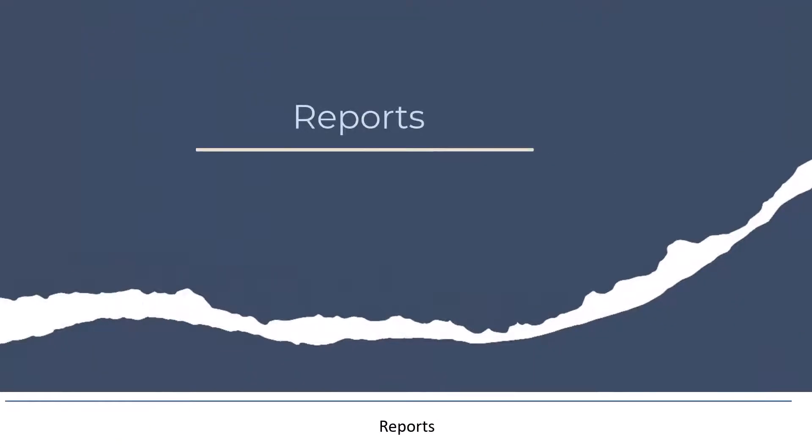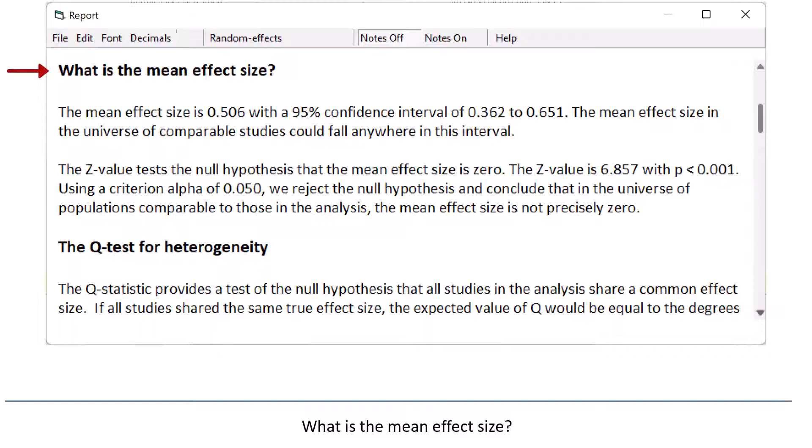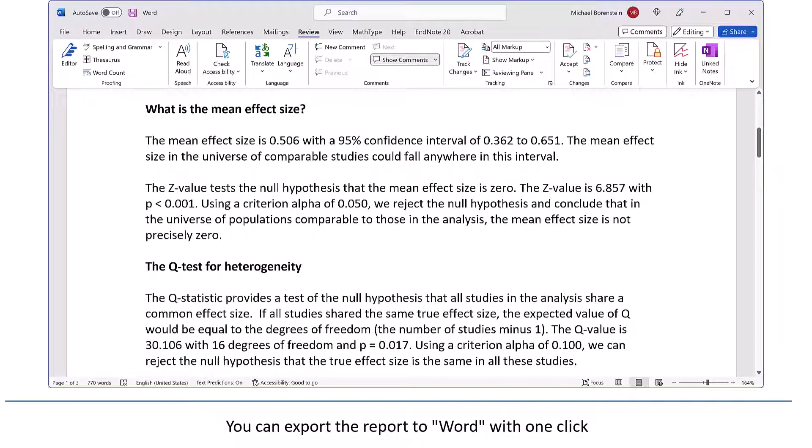Reports. The program can generate a report that explains the meaning of all the statistics. In this example, the report reads, in part, what is the mean effect size. The mean effect size is .506, with a 95% confidence interval of .362 to .651. The mean effect size, in the universe of comparable studies, could fall anywhere in this interval. You can export the report to Word with one click, and the report can serve as a template for preparing a manuscript.